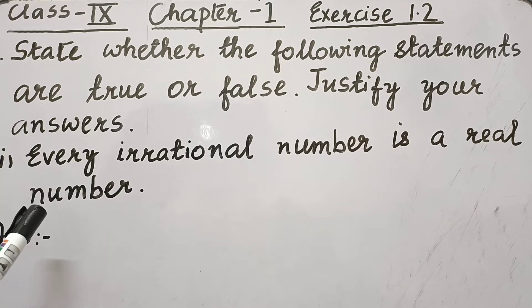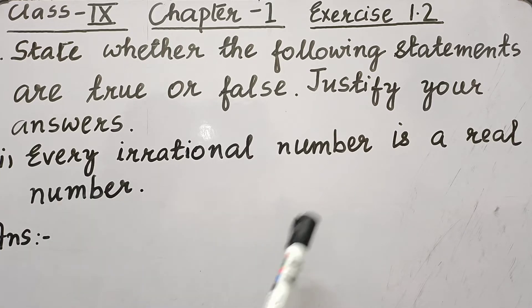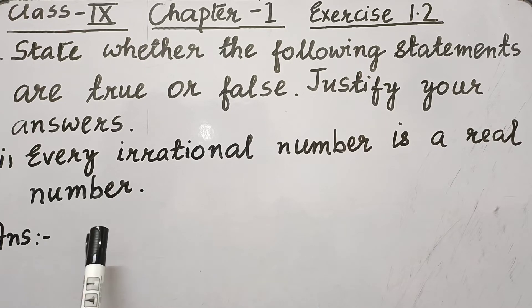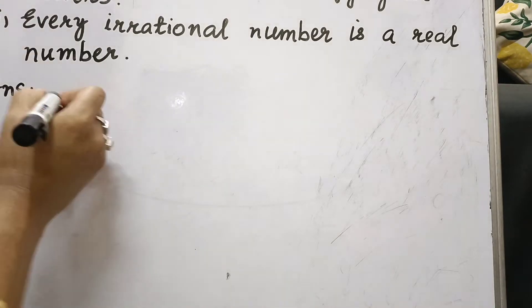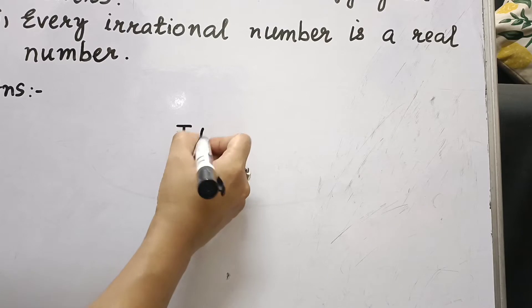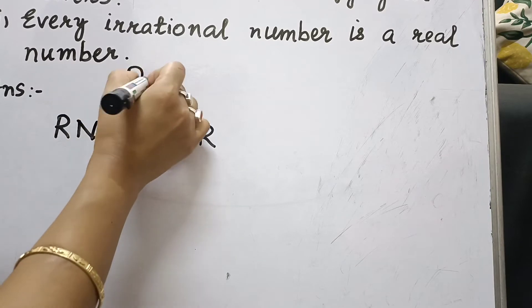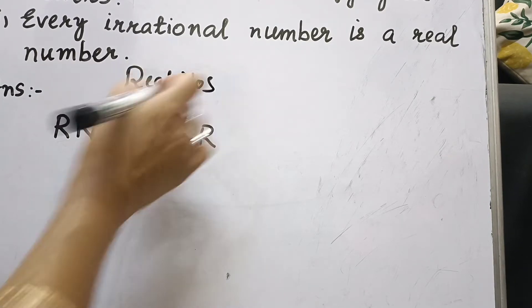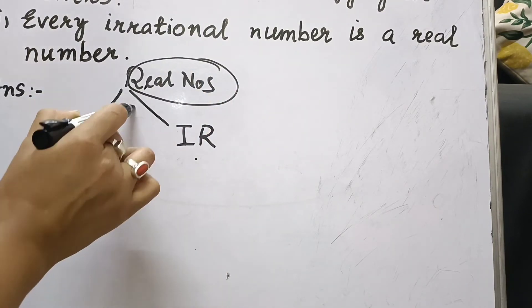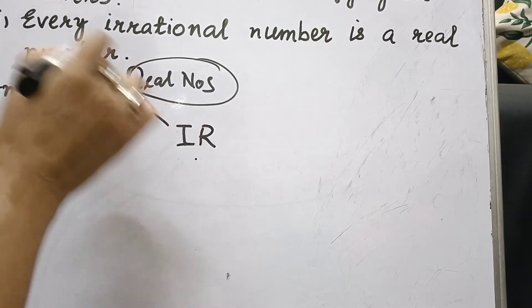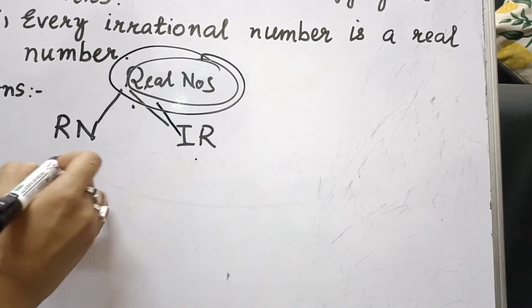The first statement is: every irrational number is a real number. Real numbers are a combination of rational numbers and irrational numbers — RN represents rational numbers and IN represents irrational numbers. So yes, every irrational number is a real number. It is true because all irrational numbers are real numbers. The answer is true.